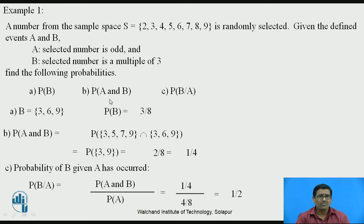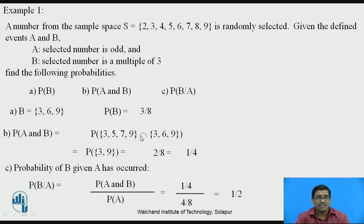Similarly, for calculation of probability of A and B, we know that 'and' means intersection. To calculate P(A and B), we first list event A: selected number is odd, which gives 3, 5, 7, 9. Then event B: selected number is a multiple of 3, which gives 3, 6, 9. The intersection means the common elements of these two events A and B.